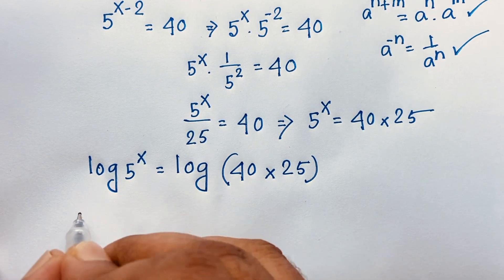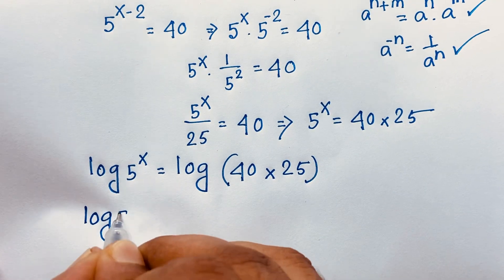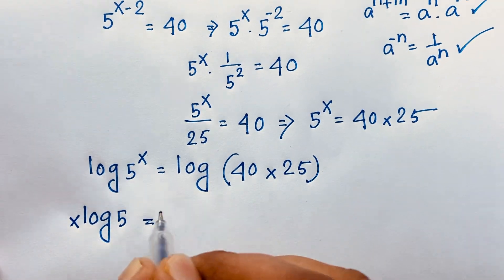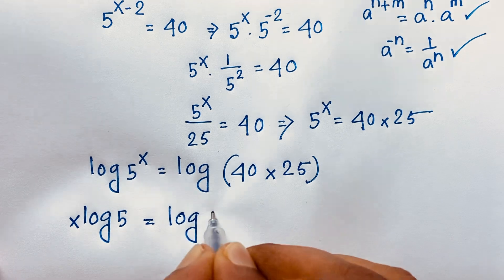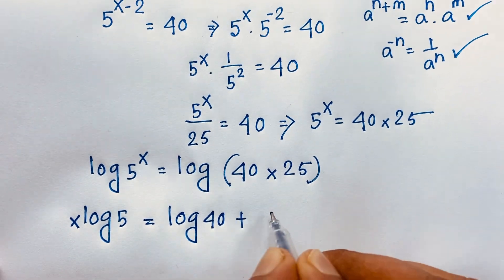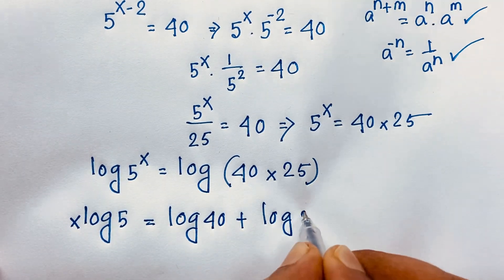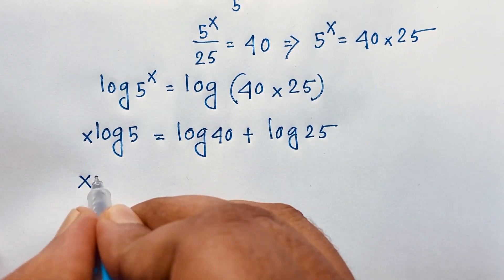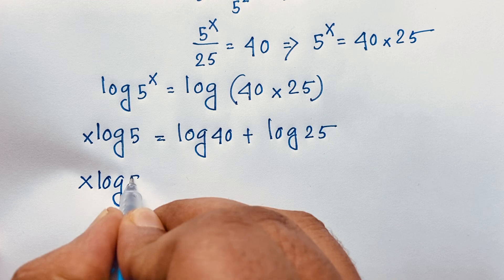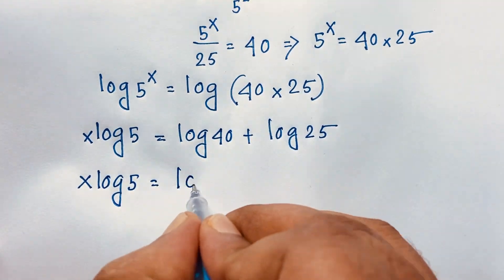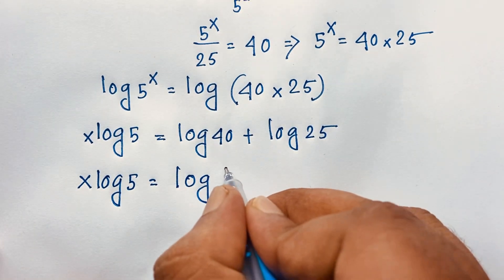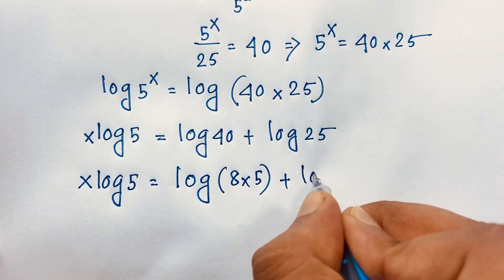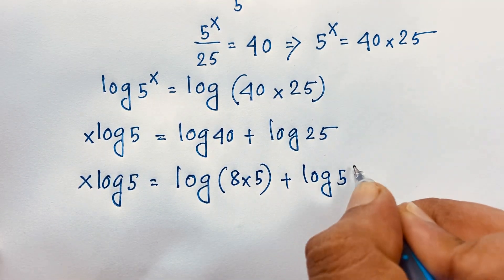You can see this: it will be log 5. According to the natural log formula, the x moves in front. So x times log 5 is equal to log 40 plus log 25. Log 40 can be written as log of 8 times 5, and log 25 is log of 5 to the power 2.